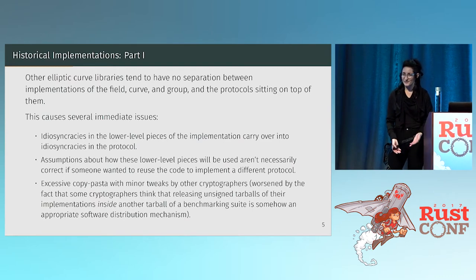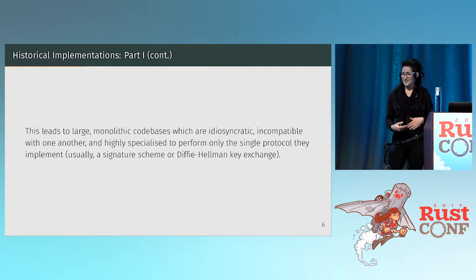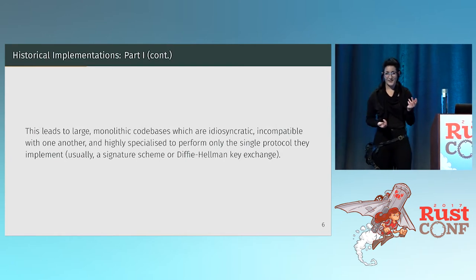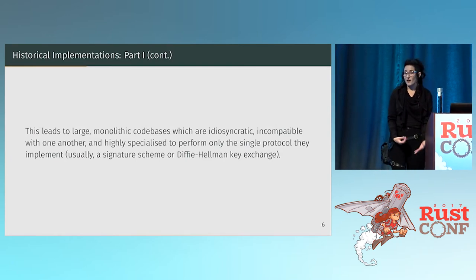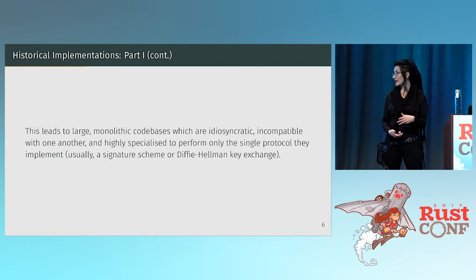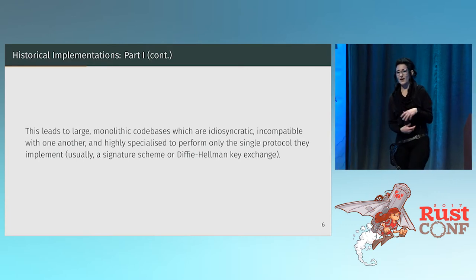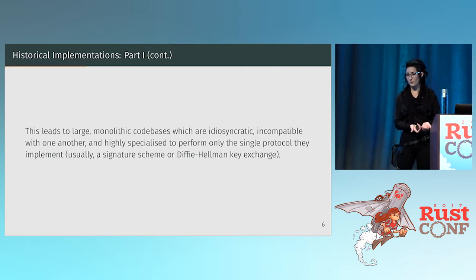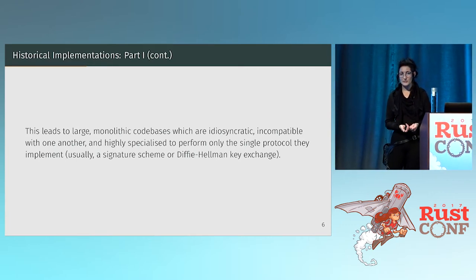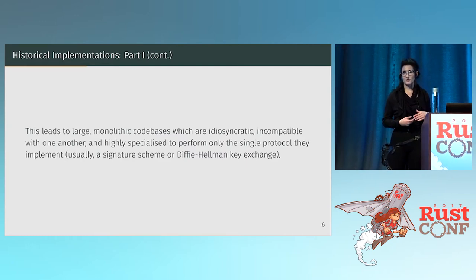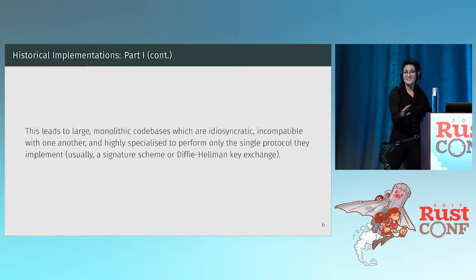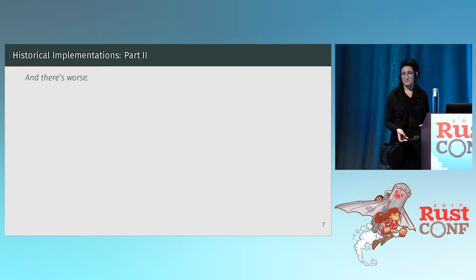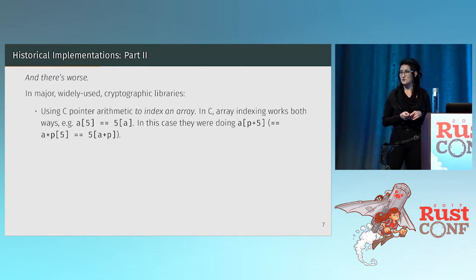This leads to large monolithic codebases which are idiosyncratic, incompatible with one another in really hard-to-debug ways, and often highly specialized to perform only the single protocol they're implementing — usually signatures or key exchange — with no consideration that you might want to do something else in the broader field of cryptography.